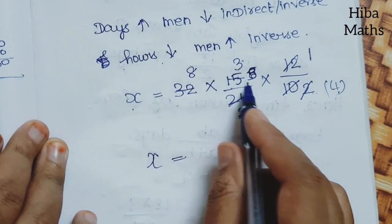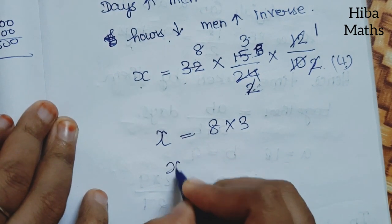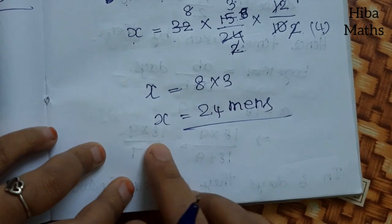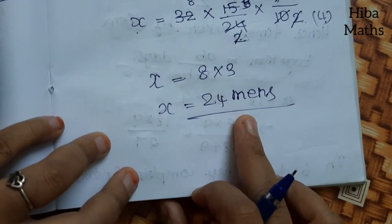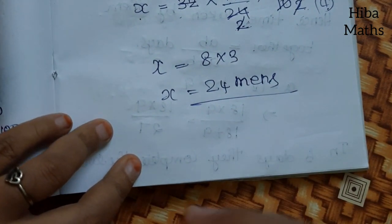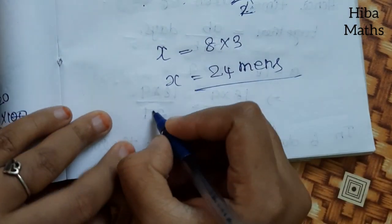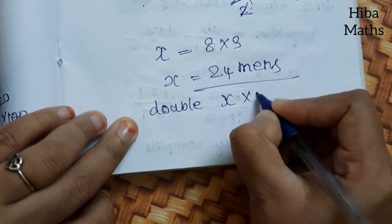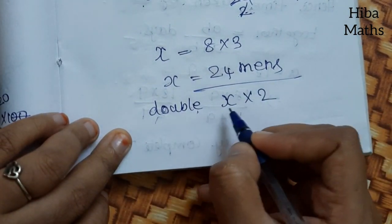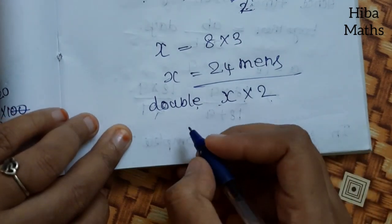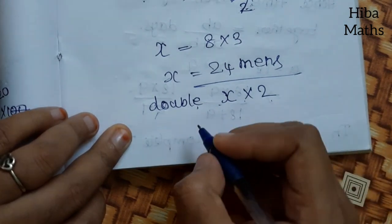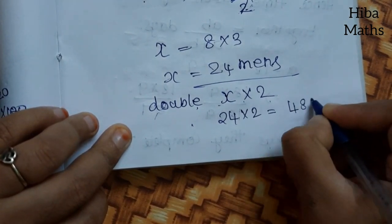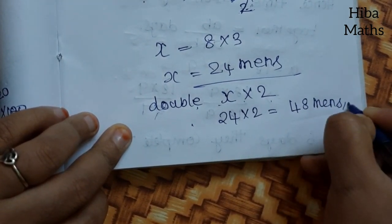X is equal to 8 into 3, which is 24 men. So we have 24 men. But the question asks to do double the work, so we need 24 into 2, which equals 48. So, 48 men can do double the work.